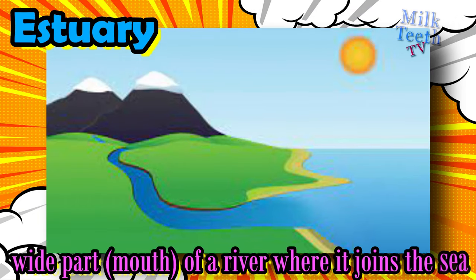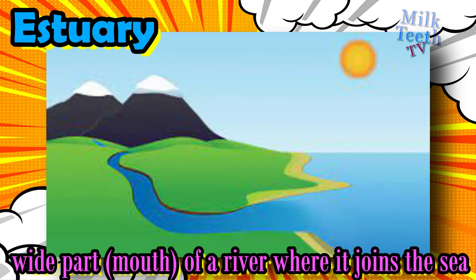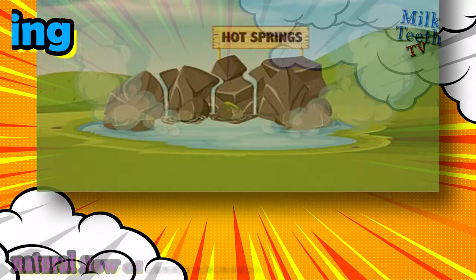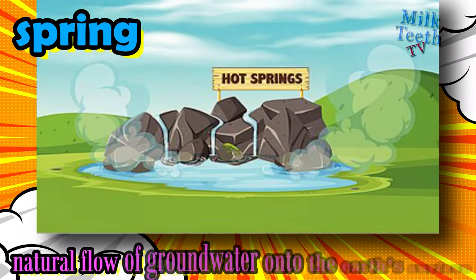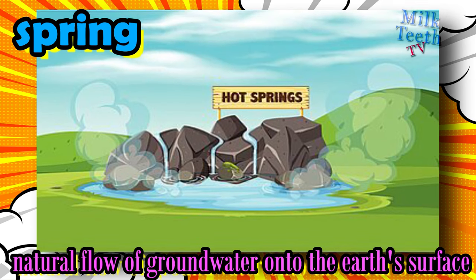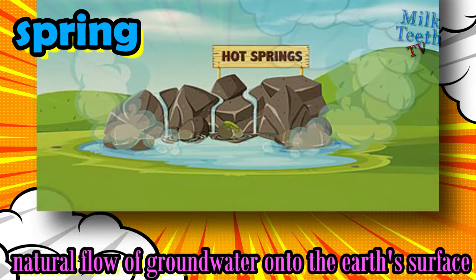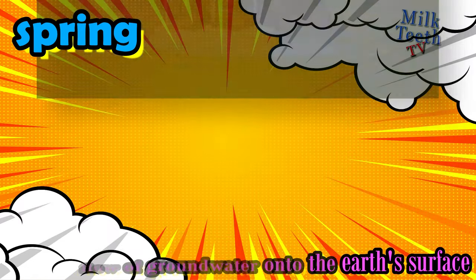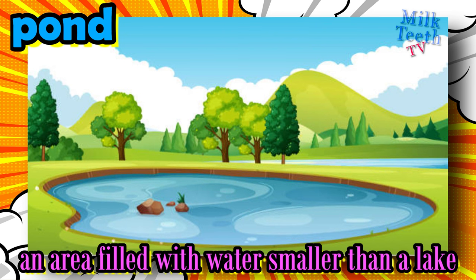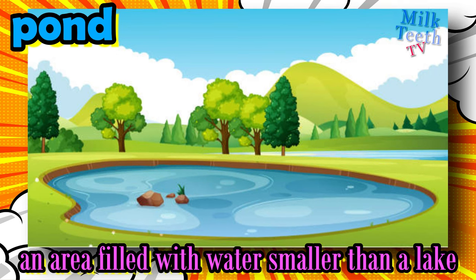Estuary: the wide part or the mouth of a river where it joins the sea. Spring: natural flow of groundwater onto the earth's surface due to the internal pressure of the earth. Pond: an area filled with water, smaller than a lake.